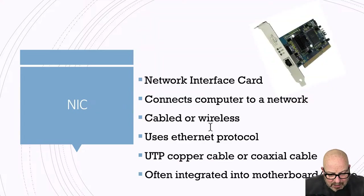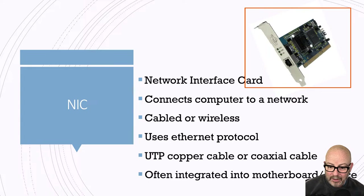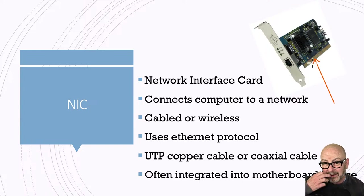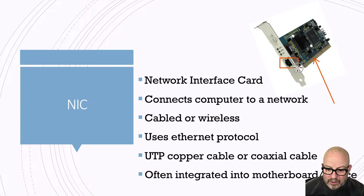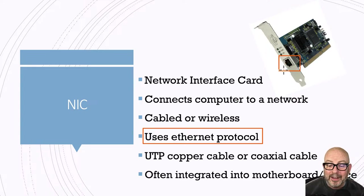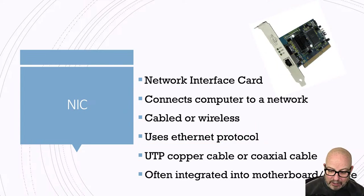A NIC — a network interface card — connects computers to a network. If you've taken a computer apart, these are pressed into your motherboard; there's a slot for it. This is your port where you can put in your Ethernet cable, and there'll also be a wireless connection, so you've got wired and wireless. It uses the Ethernet protocol, which is for your local area network. These are usually integrated into the motherboard.